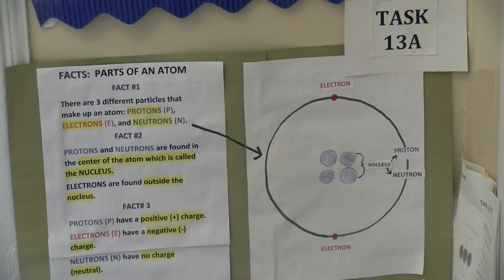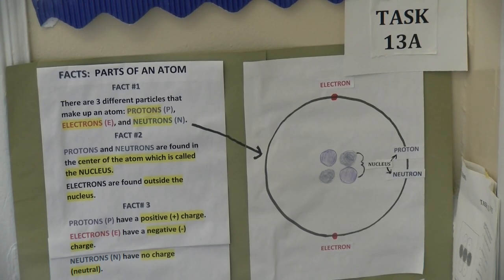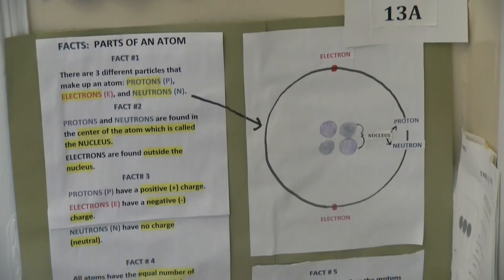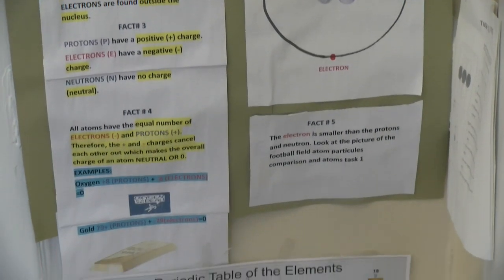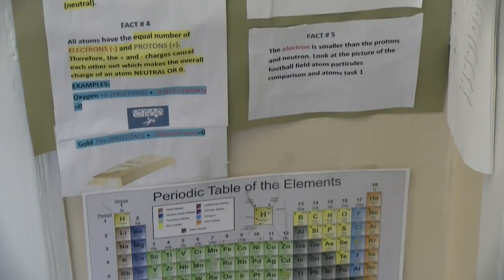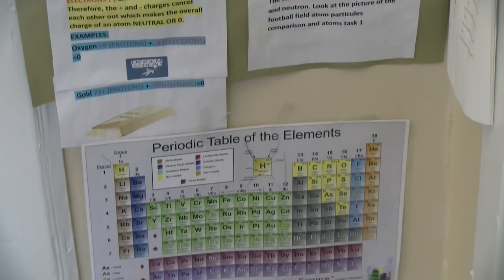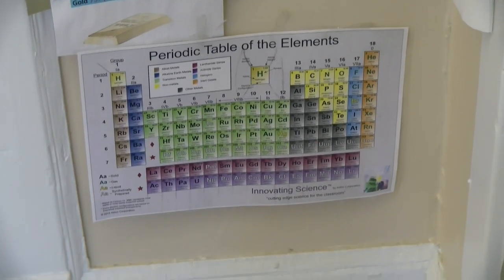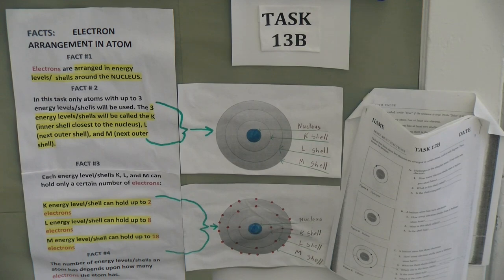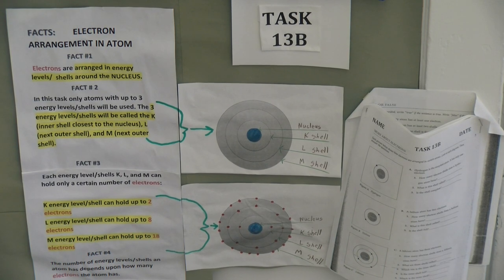Teacher made tasks. A lesson in a chemistry book with facts defining an atom is broken down to a second grade level, with pictures relating to short sentences and important words highlighted. A second example with the same principle is a chapter on electron arrangement in the atom.